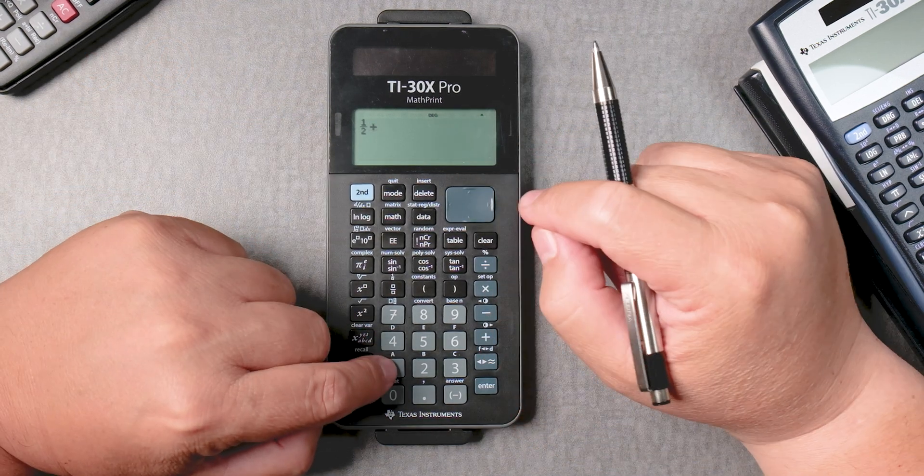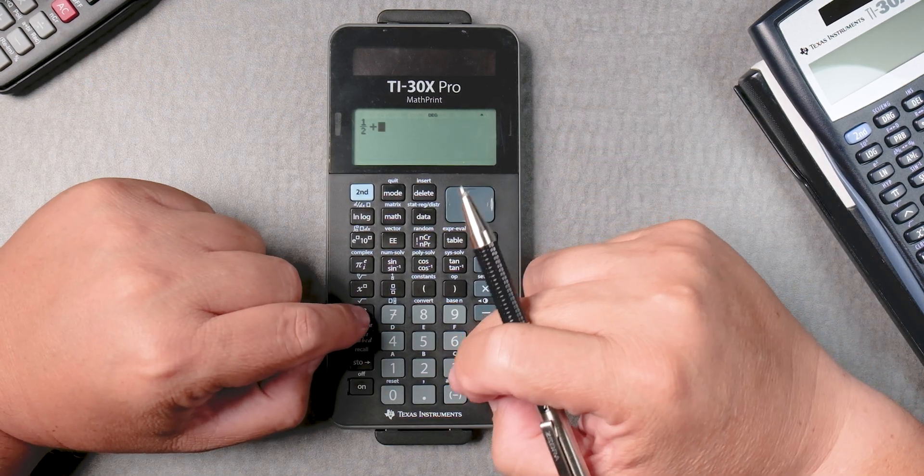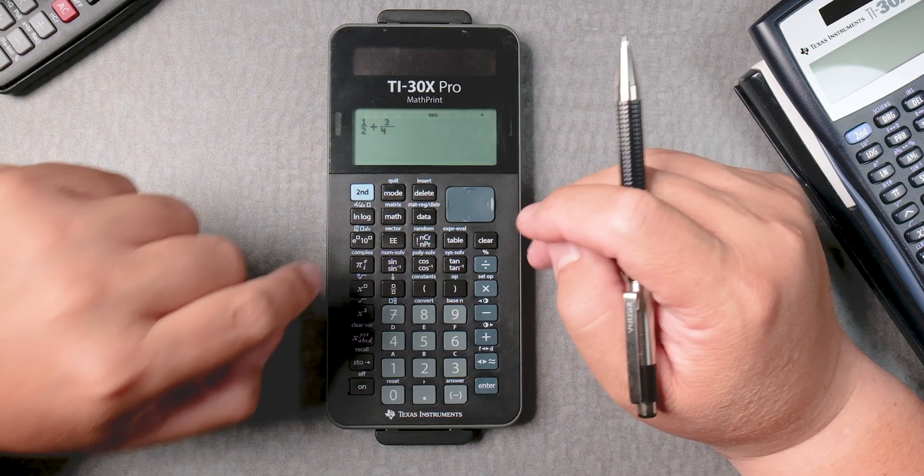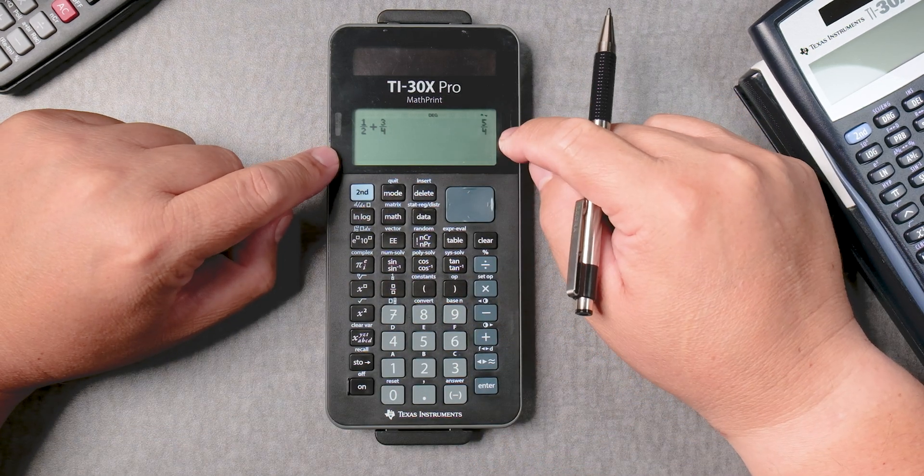So now you have a fraction plus three-fourths. You can press three, then the fraction button, and then four, and then enter, and it gives you five over four.